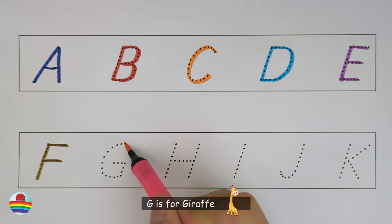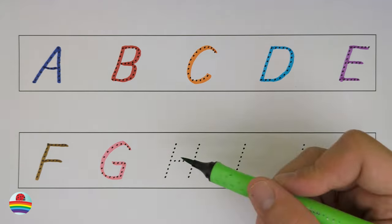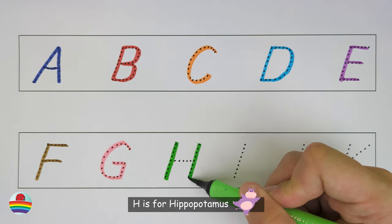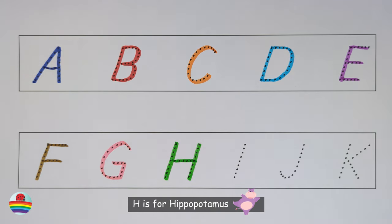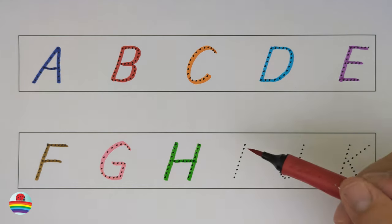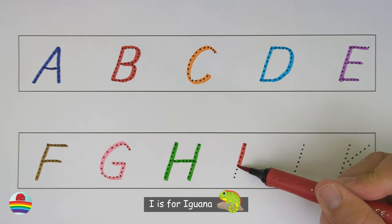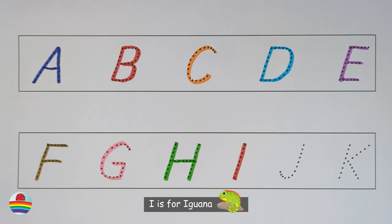G. G is for Giraffe. G. H. H is for Hippopotamus. H. I. I is for Iguana. I.